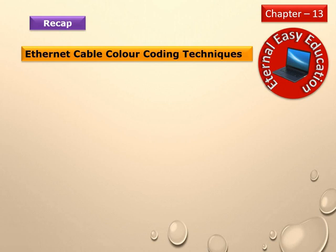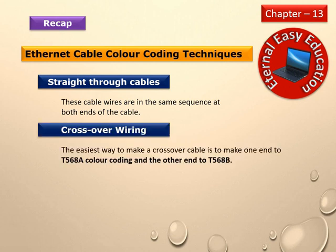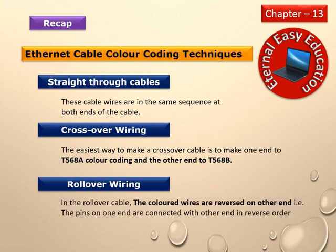Color coding technique recap: Straight-through cables have wires in the same sequence at both ends, one-to-one. For crossover, one end uses T568A color coding and the other end uses T568B. For rollover wiring, the colored wires are reversed on the other end — the pins of one end connect to the other in reverse order.